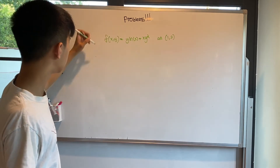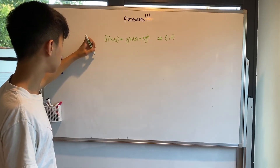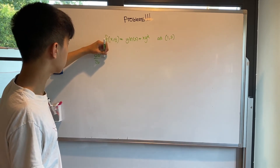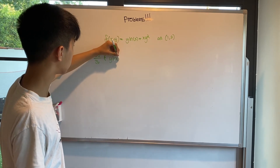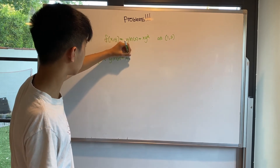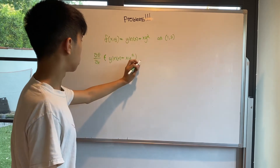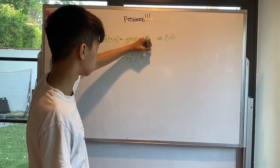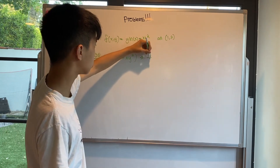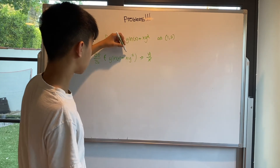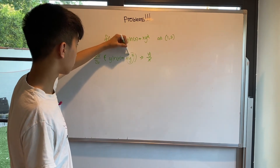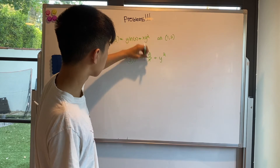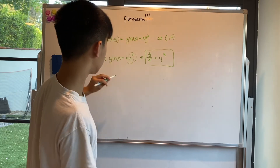First, we need to find the partial derivatives. Let's find the partial derivative with respect to x. The derivative of ln(x) is 1/x. We treat y like a constant, so we get y/x. Then we treat y² like a constant and differentiate x, so we end up getting y². That is our partial derivative with respect to x.